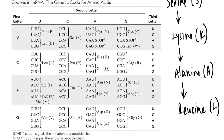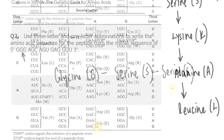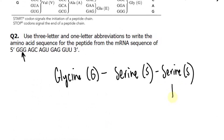Then GAG — G, A, and G — will be glutamic acid, which gets the abbreviation E. Do not confuse that with glutamine.